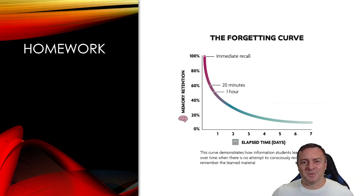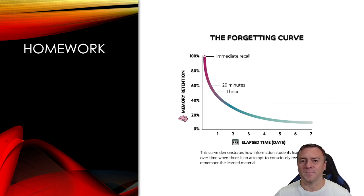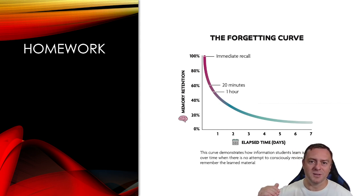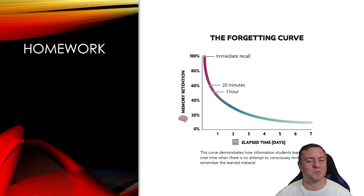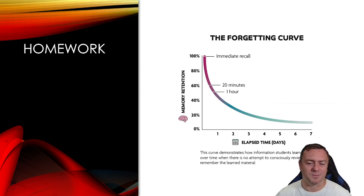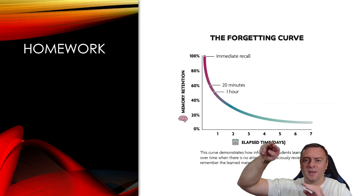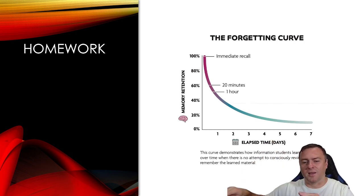Homework — I know it's one of those historically not-so-fun parts — but homework is used to fight the forgetting curve. The idea is: immediately after you finish learning something, you have 100% retention of it, but after 20 minutes that automatically drops down to 60%, and after an hour it drops down to about 50%. The idea behind homework is it actually pushes retention back up to 100% and changes the shape of that curve. So it's really important to be consistent with this.